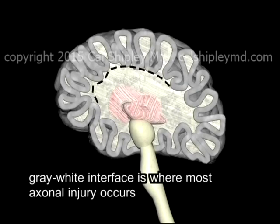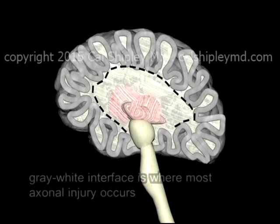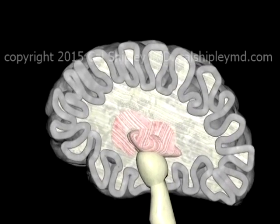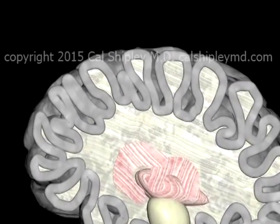It is at the interface between the gray matter and white matter that most axonal injury occurs, with rapid deceleration injuries of the brain.